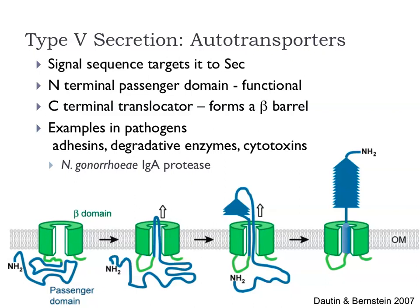Type 5 secretion is a particular favourite of Ian Henderson who works here as a bacteriologist. The most common kind of type 5 secretion is the autotransporter. What happens is that a signal sequence targets the protein to the Sec translocon, which takes it through into the periplasm. The autotransporter has a number of different domains: there is an N-terminal passenger domain which provides the functional activity of the protein, and a translocator domain at the C-terminus.